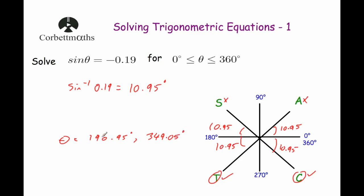These two angles — 190.95° and 349.05° — will give sin θ = −0.19. When the value is negative, you still do the inverse sine of the positive value, and the negative sign just tells you which quadrants to use to find the solutions.